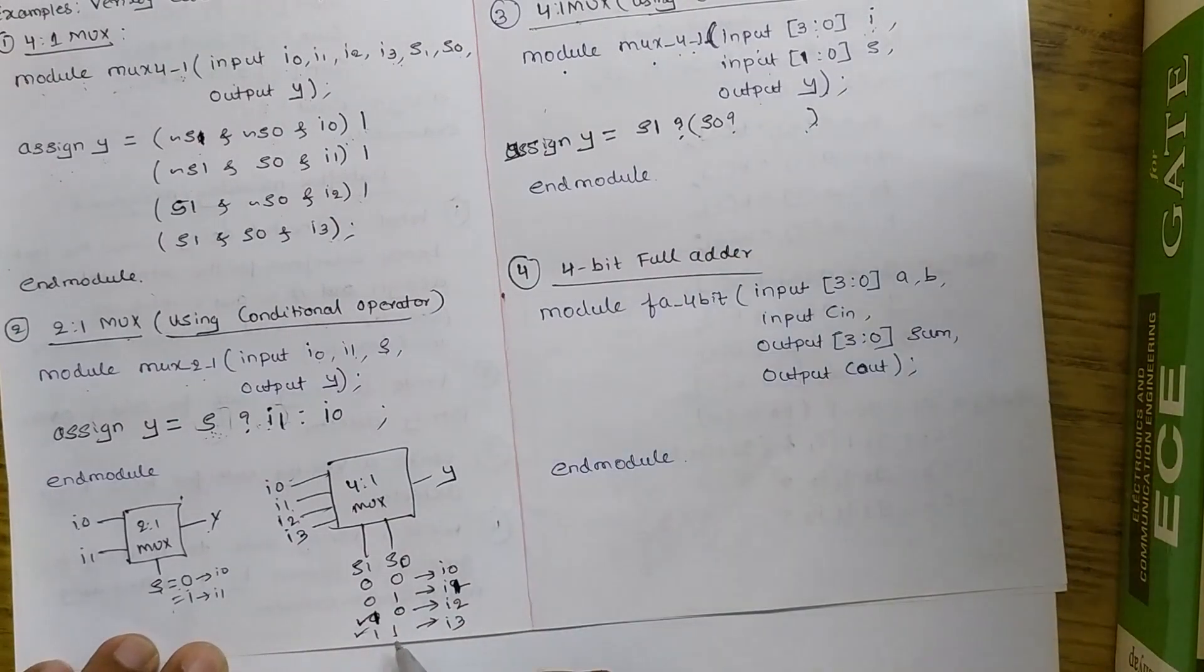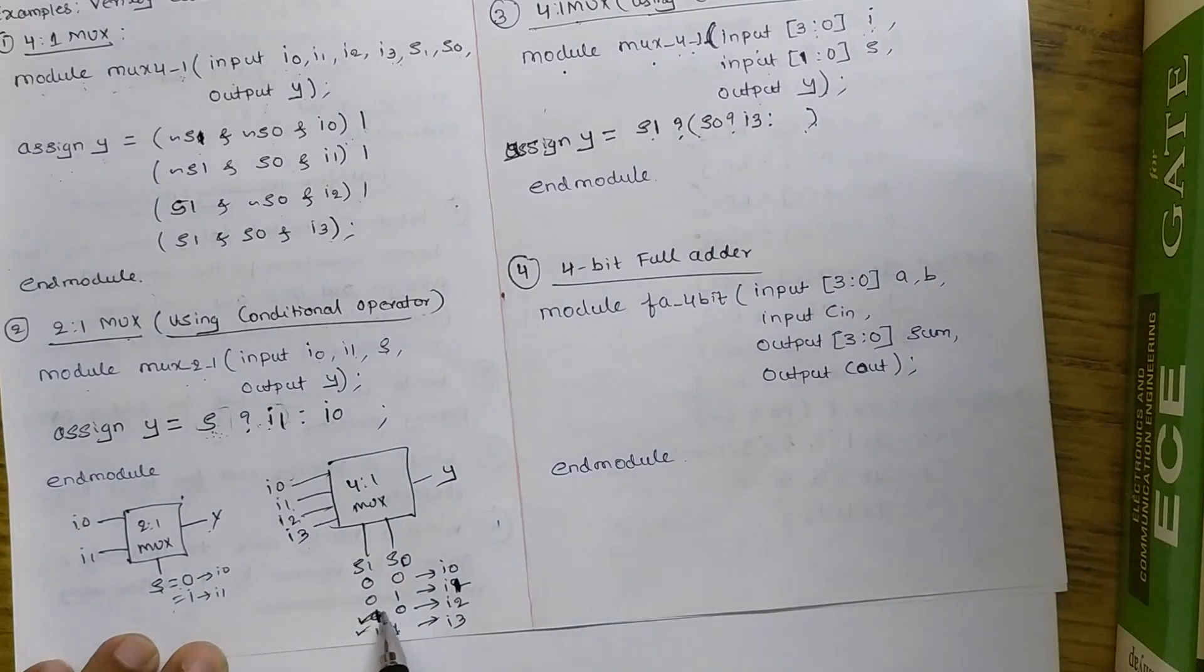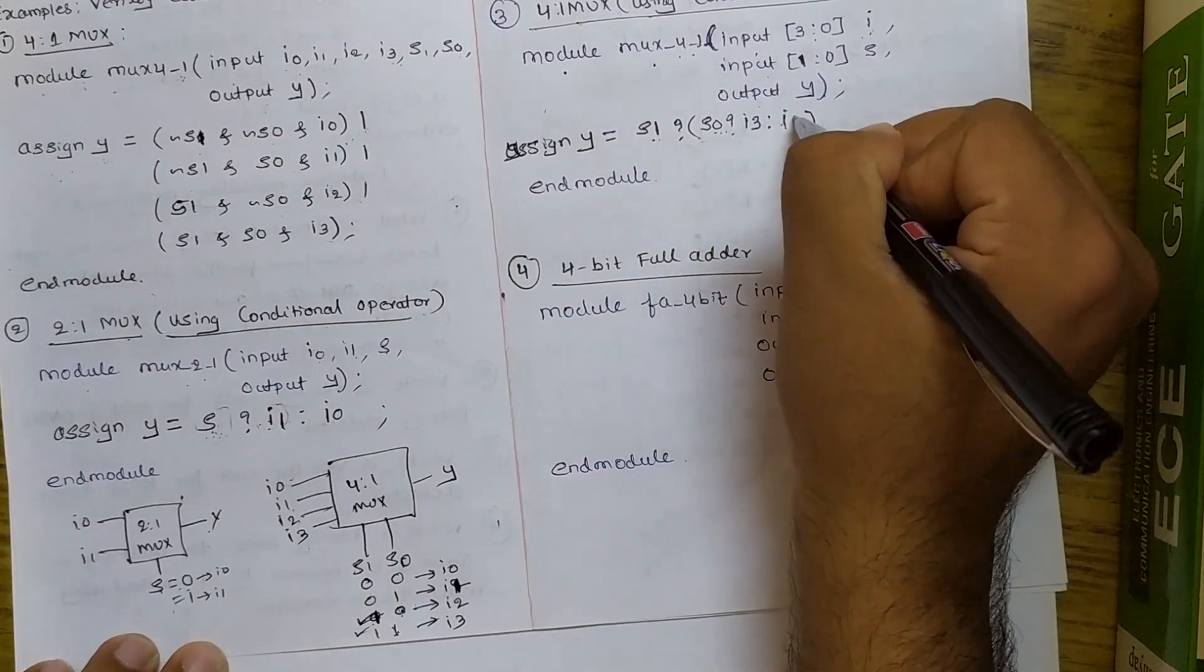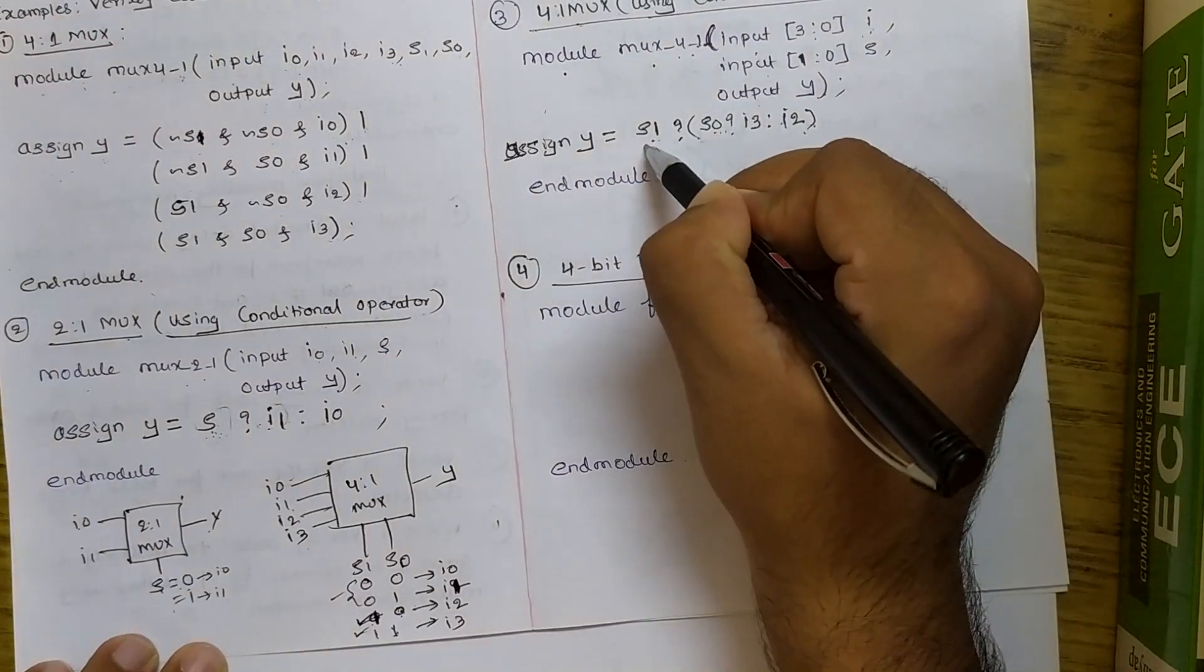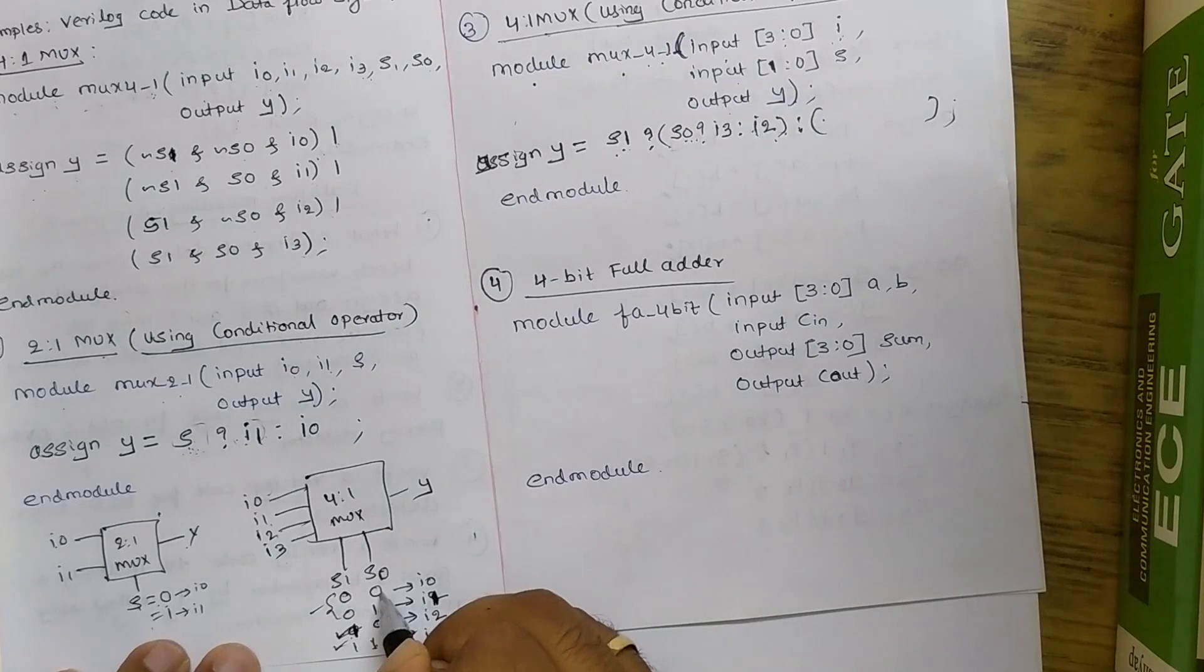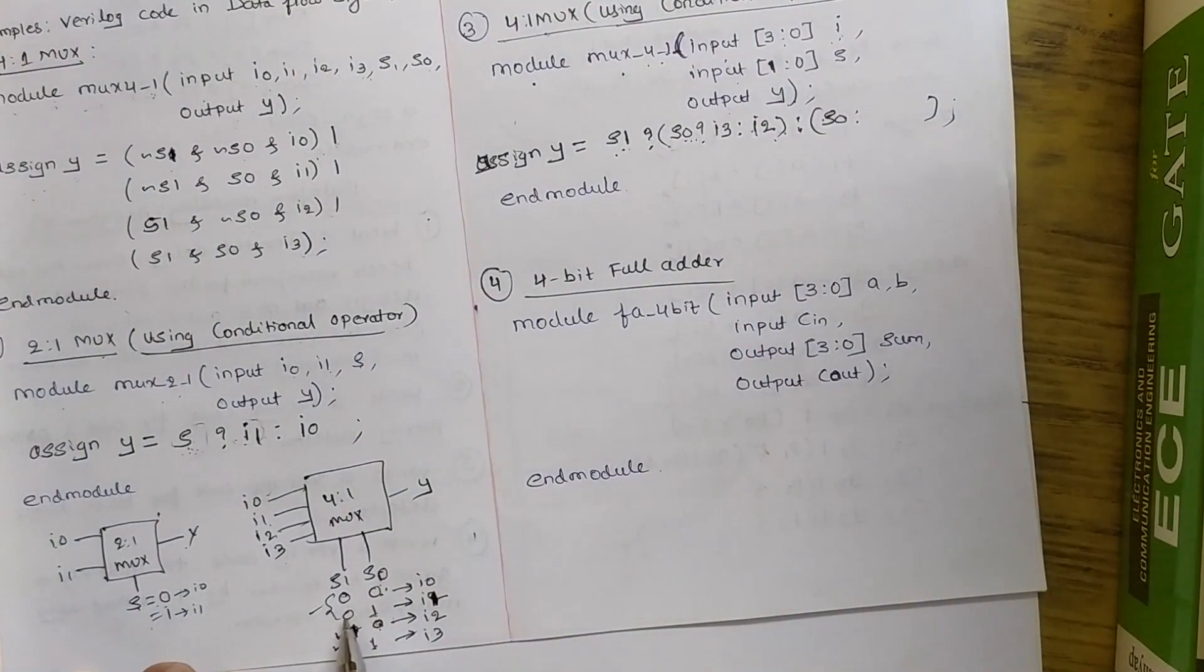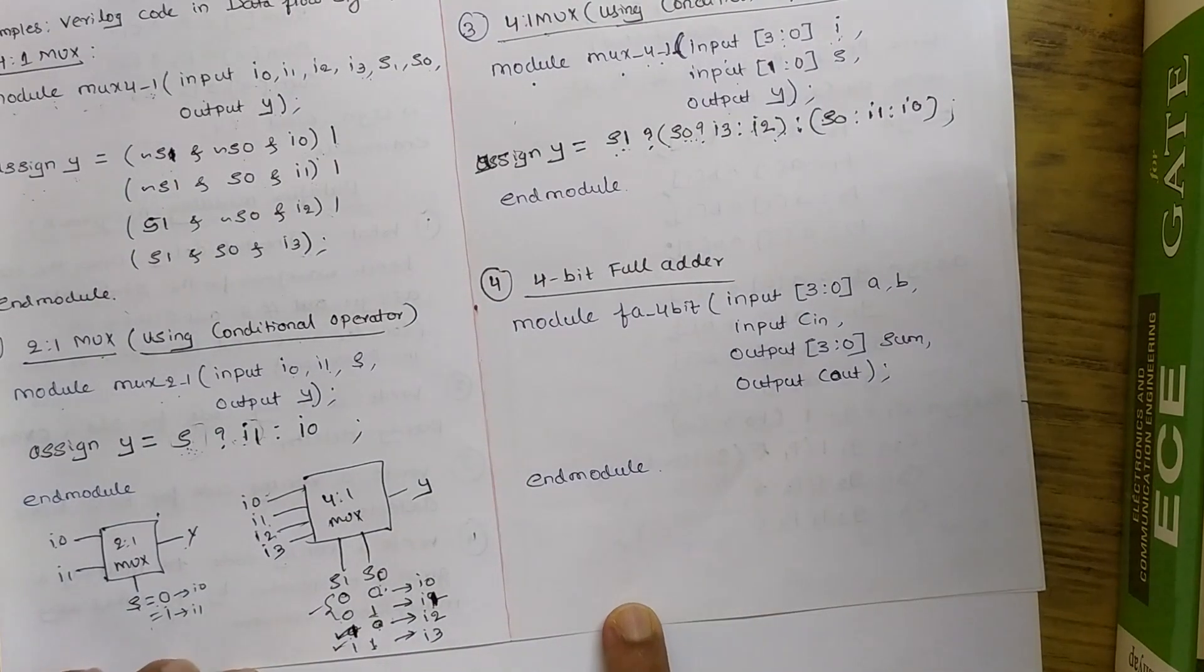I'll check S0. If S0 is 1, true expression should be written here. Y should be allotted with I3. Now when S1 is true and S0 is false, S0 is false means 1,0. When it is 1,0, I should go for false expression of S0. This is I2. When S1 is 0, we need to directly go for the false statement, which comes after colon. So false statement should be written here, followed by semicolon. Again, I will be checking S0. So here, S0 if it is true, this one, 0,1, I1 should be the true expression. If not, I0. So this completes your nested conditional operator.